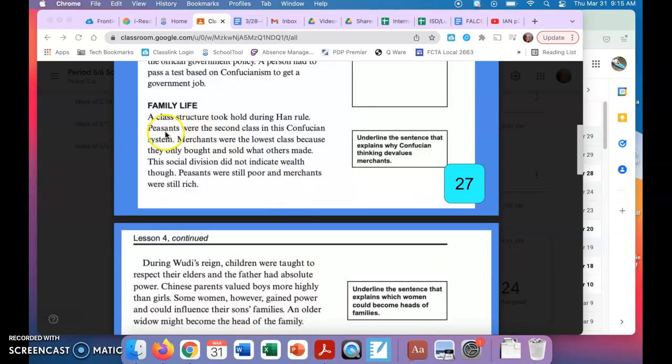The next section, family life. So I'm going to read this box here on the right hand side. This is what you're going to do: you don't have an answer to write, you're going to underline the sentence that explains why Confucian thinking devalues merchants. So what sentence explains why Confucian thinking devalues merchants? All right, here we go.